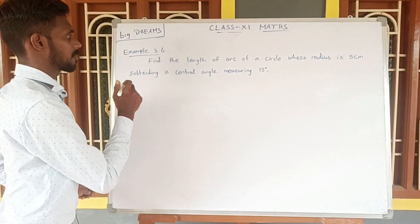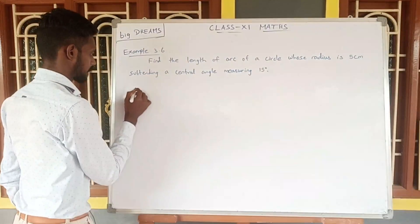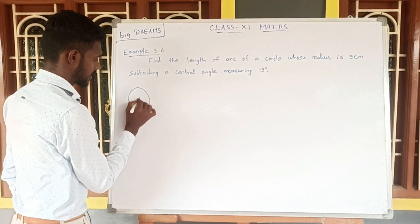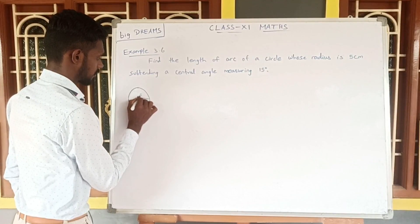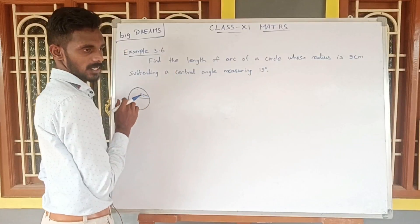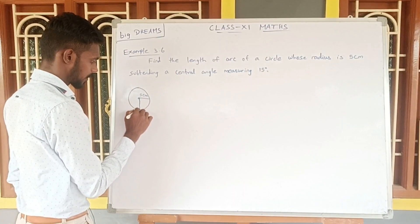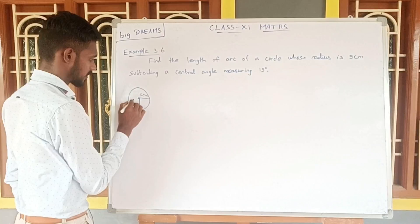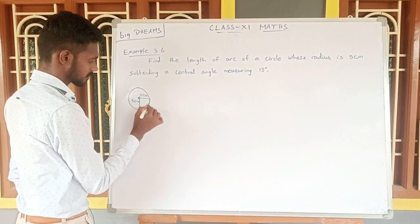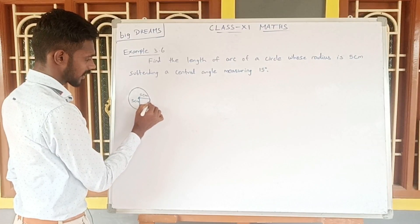So in this case, there is a circle. The radius is 5 centimeter. There is an arc here, so there is a sector. This is the center. Let us see the radius — 5 centimeter. So this is the arc. This arc — we need to find the length of the arc.